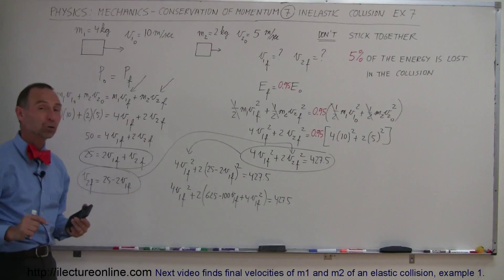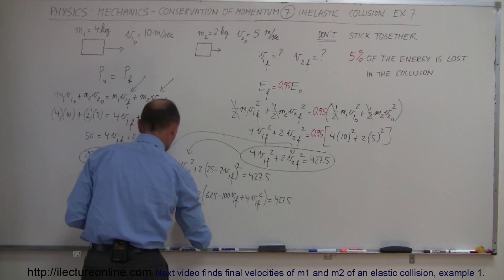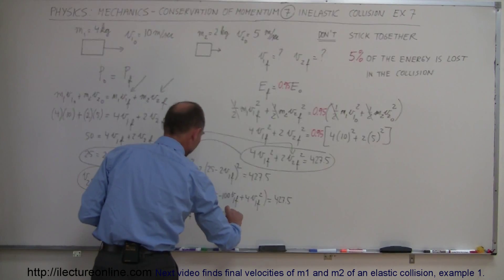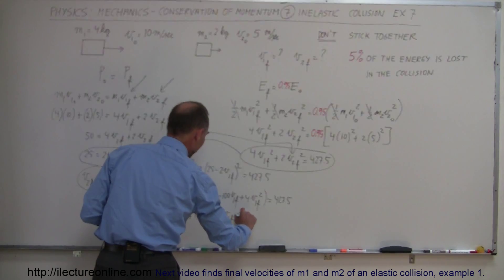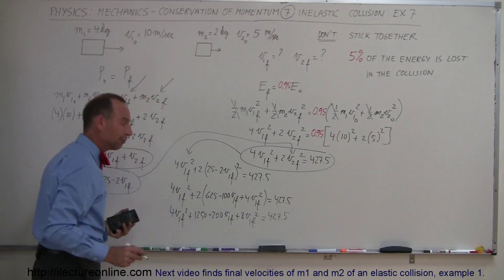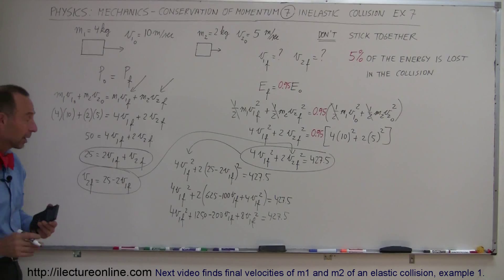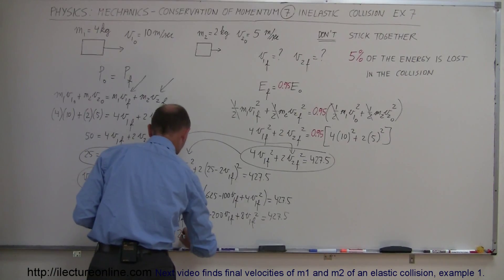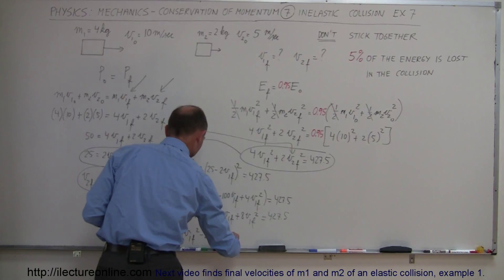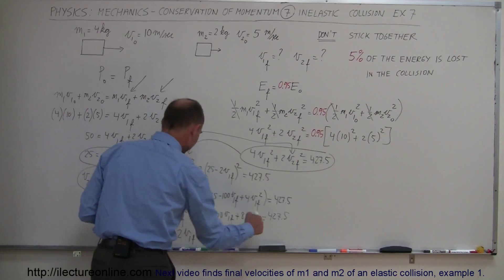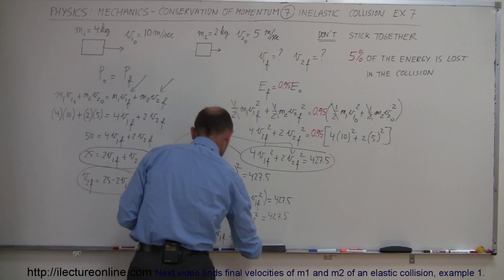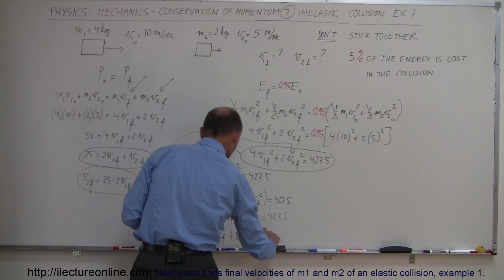Now we still have to get rid of these parentheses, multiply everything by 2. So we got 4V1 final squared plus 1250 minus 200V1 final plus 8V1 final squared equals 427.5. And so finally we're going to combine everything on one side to make it a quadratic equation we can solve. So we get 12V1 final squared minus 200V1 final and then we have 1250 minus 427 plus 1250 is plus 822.5 equals 0.